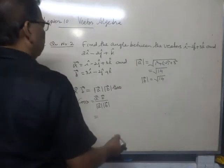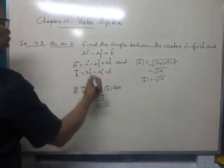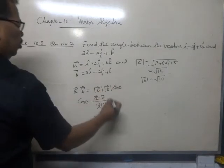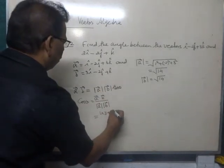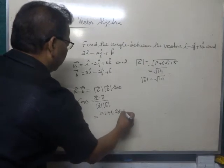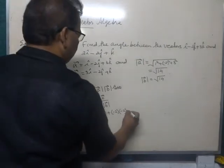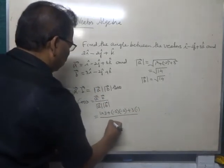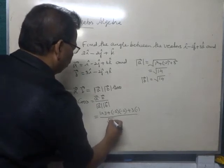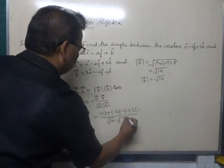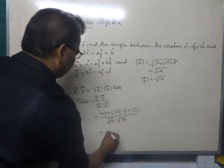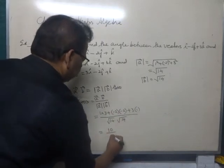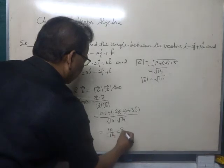That's equal to, what's a dot b: 1 into 3 plus minus 2 into minus 2 plus 3 into 1, divided by root 14 into root 14. That's equal to 10 divided by root 14, that is 5 by 7.